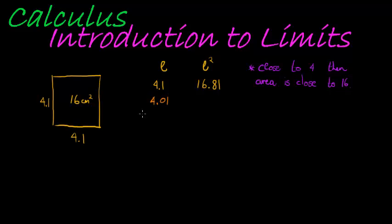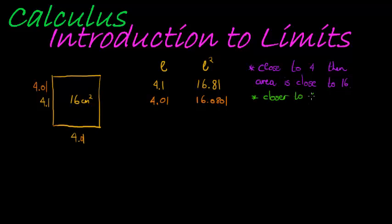The next thing I see is: let's try to get closer. Let's say I measure a little bit more accurately and I get a measurement of 4.01. Now if I do 4.01 squared — so both sides are 4.01 instead of 4.1 — then I'll get 16.0801. When I get closer to 4, the area is closer to 16.